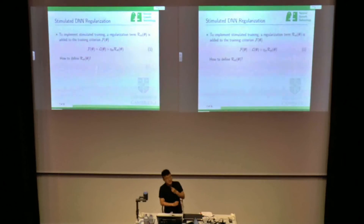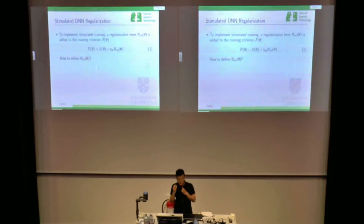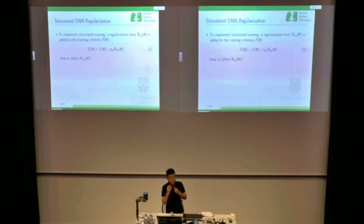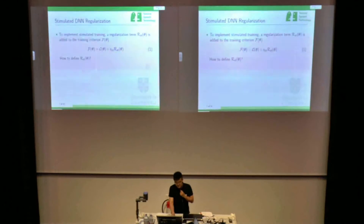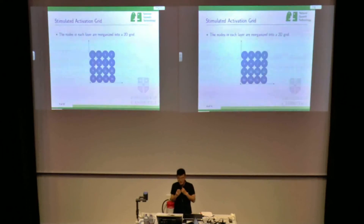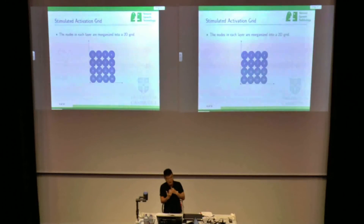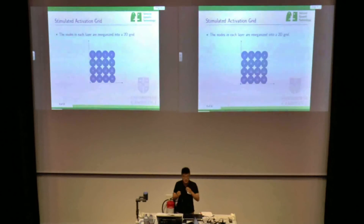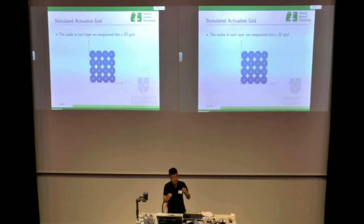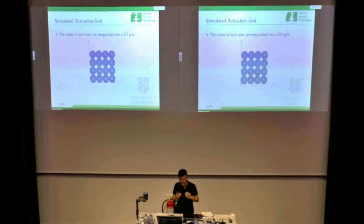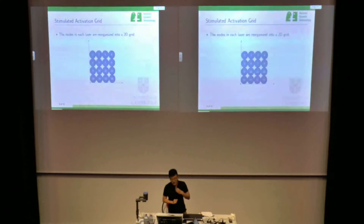So what is a stimulated DNN? The stimulated DNN is that during the training phase, we introduce a special regularization term. This kind of regularization term can help us to better interpret the DNN behavior. In order to define this regularization term, we first need to define something called the activation grid. In this example, if we have a hidden layer consisting of 16 hidden nodes, because it's a square number, we can reorganize it into a four-by-four grid.